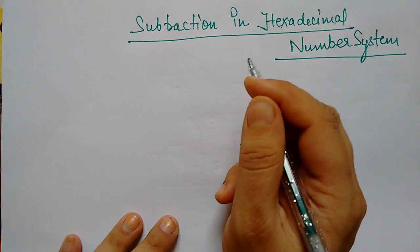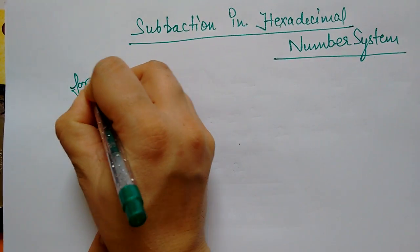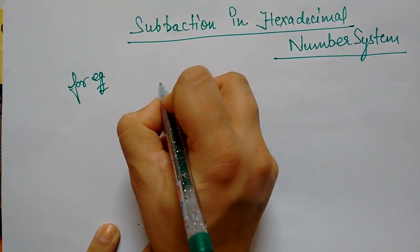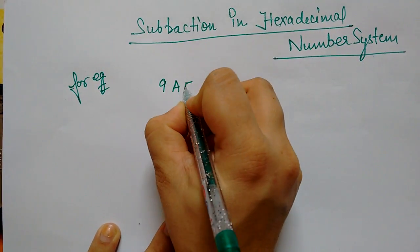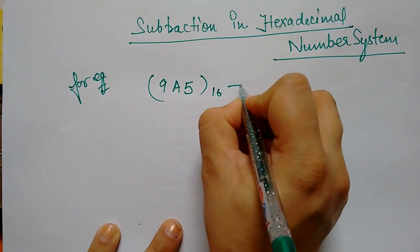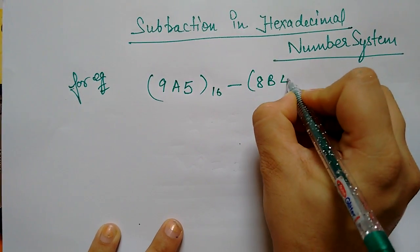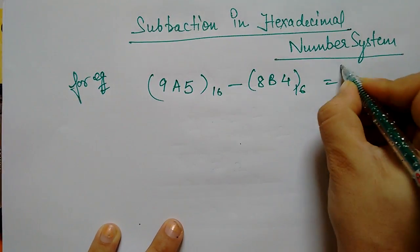Subtraction in hexadecimal number system. So how do we subtract it? For example, if you have a hexadecimal number, you have to subtract the other number from this. So how do we subtract it?